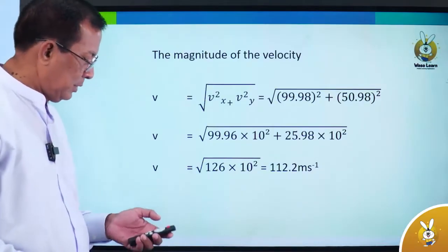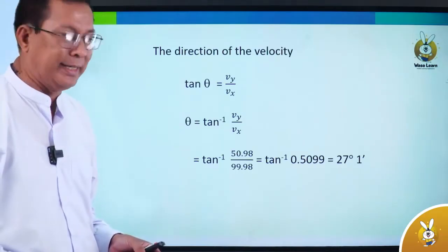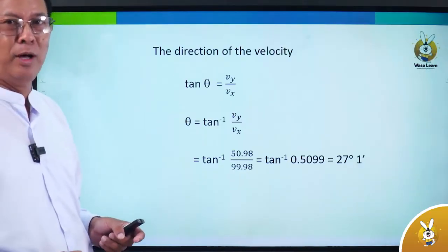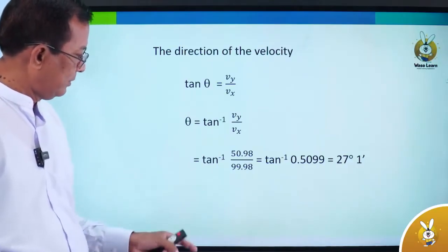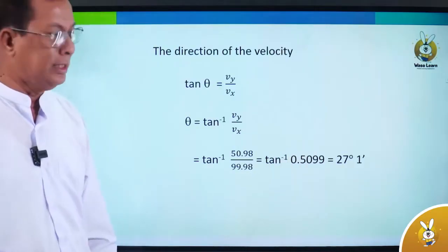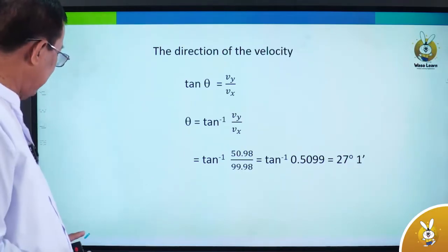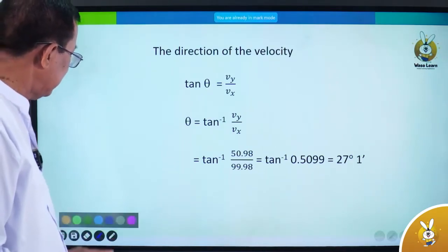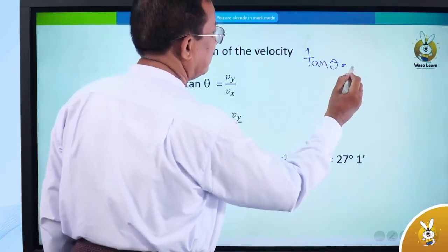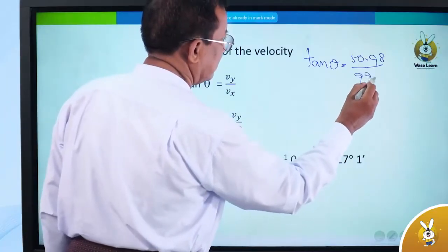The direction of the velocity equals the tangent inverse of Vy divided by Vx — opposite over adjacent. The tangent inverse of 0.5099 gives us approximately 27 degrees. So at t = 5 seconds, Vy divided by Vx equals 50.98 divided by 99.98, which equals 0.5099.